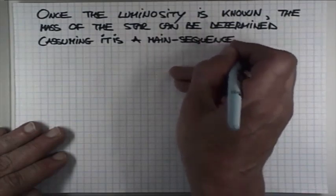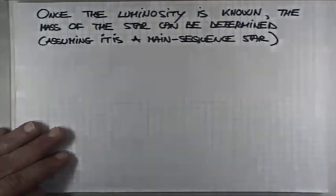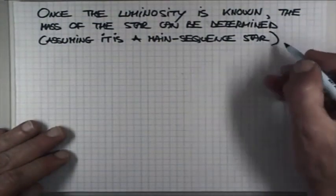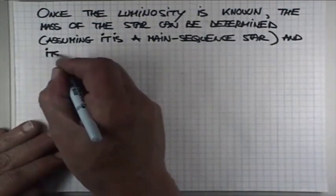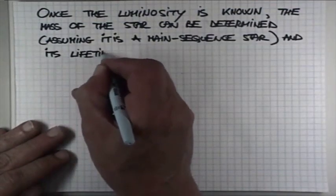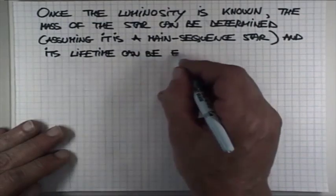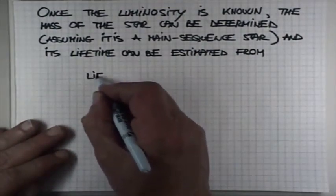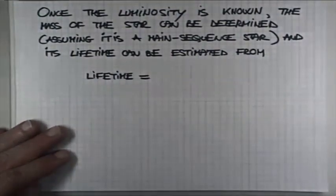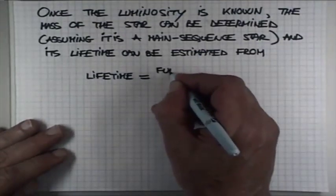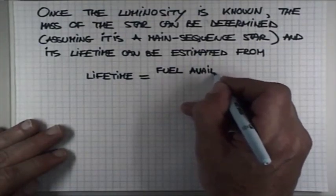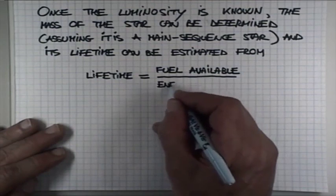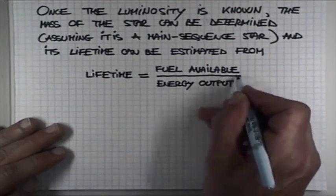That is, you can figure out the lifetime of the so-called main-sequence star. We'll learn more about that later. Once you know the mass of the star, you can determine its lifetime. Basically, the lifetime is given by the ratio of the fuel available divided by the energy output.